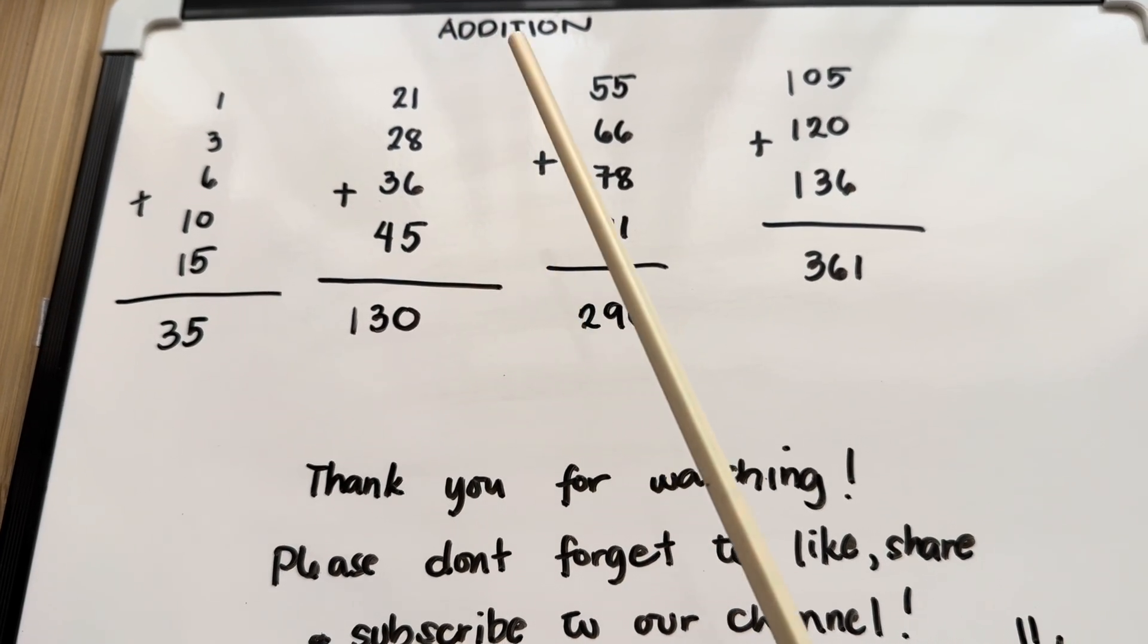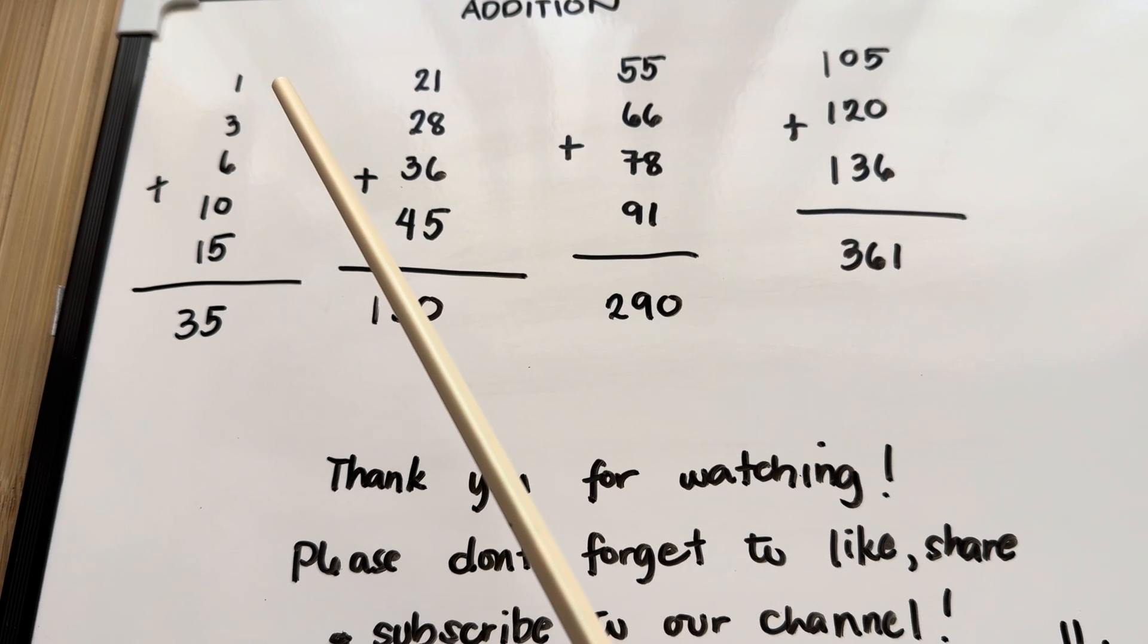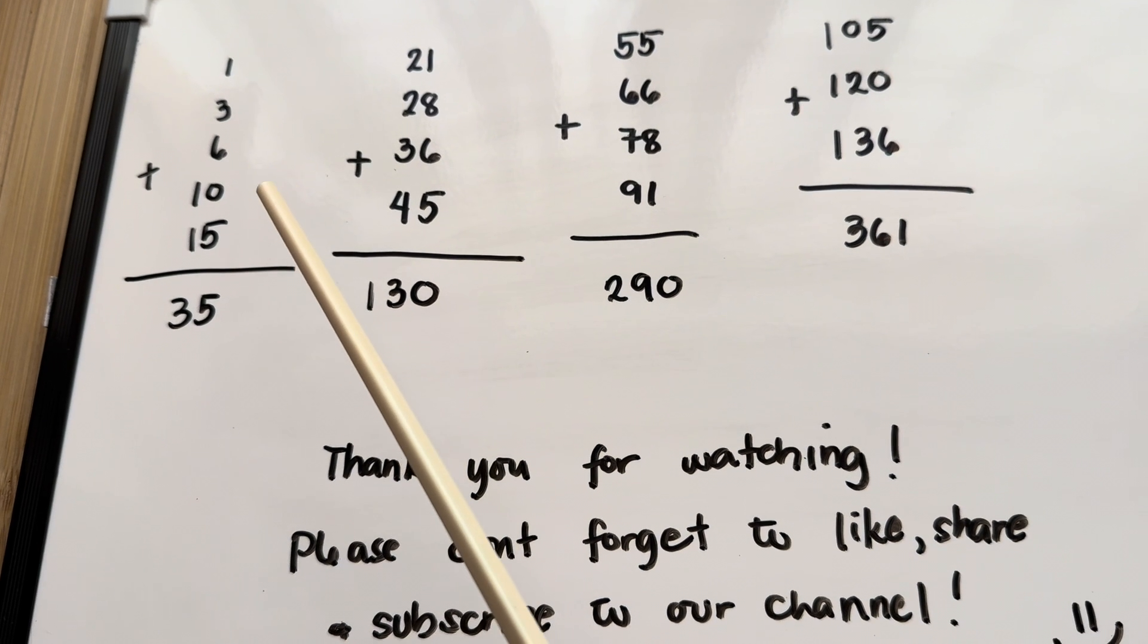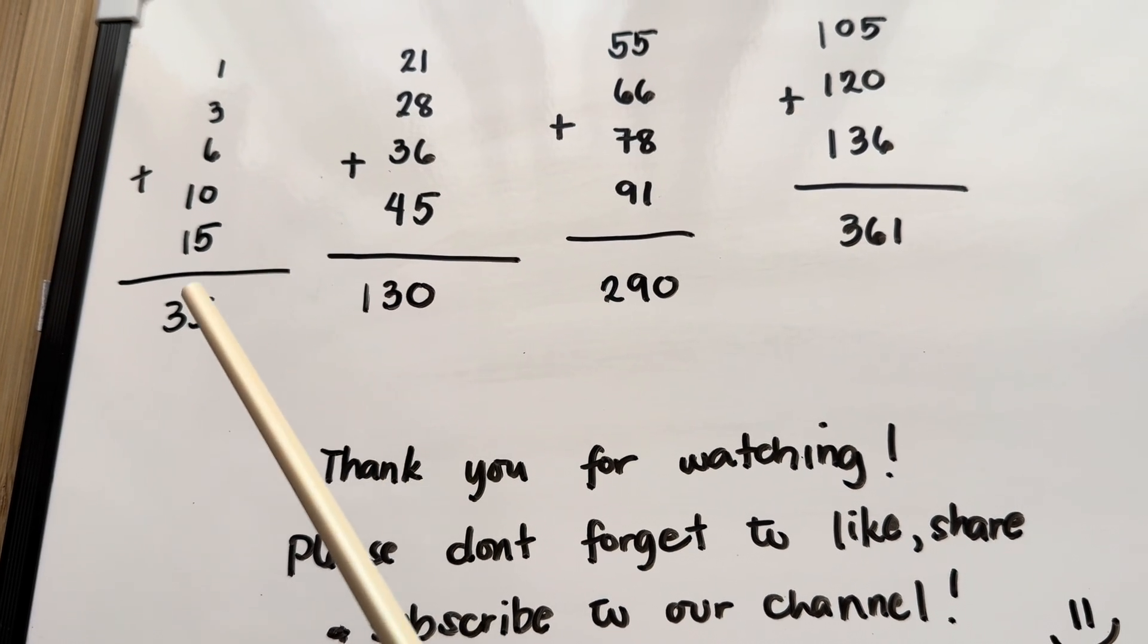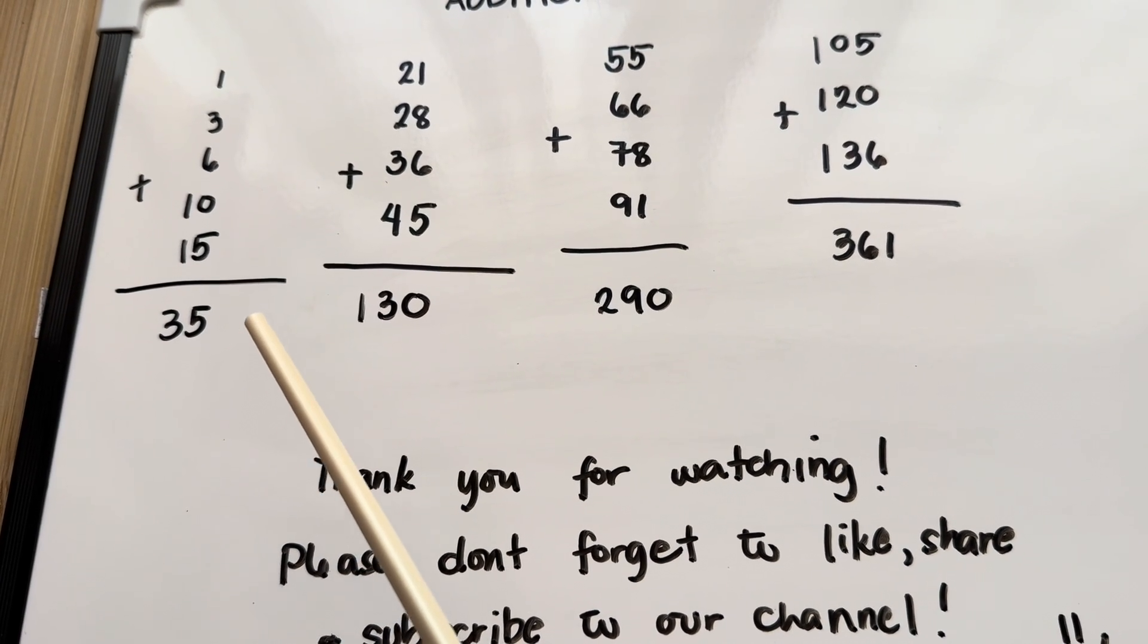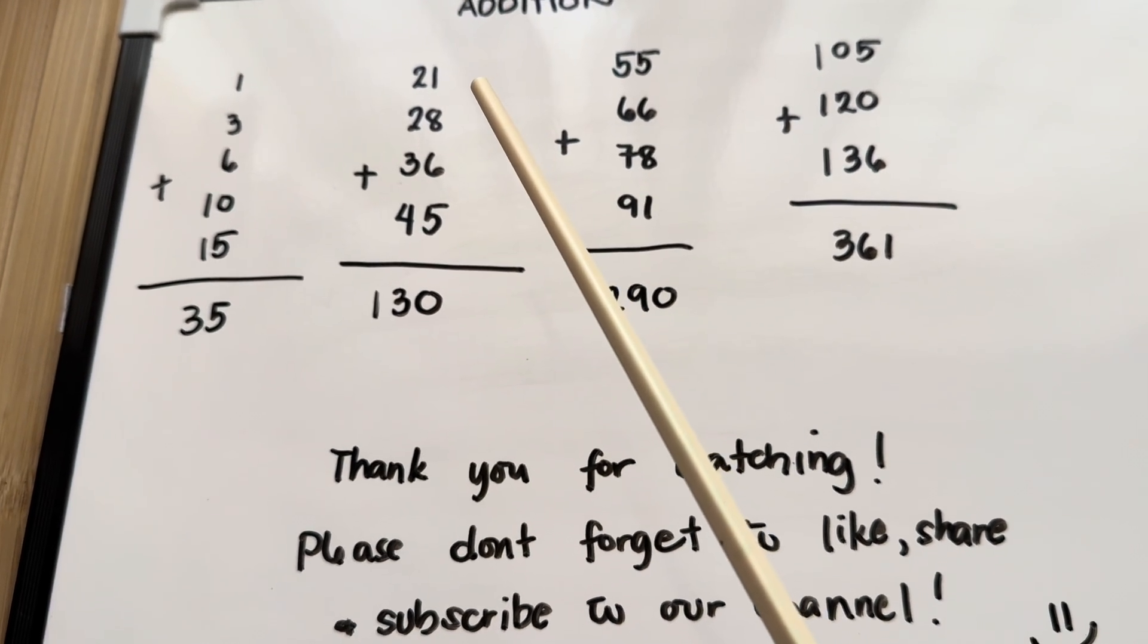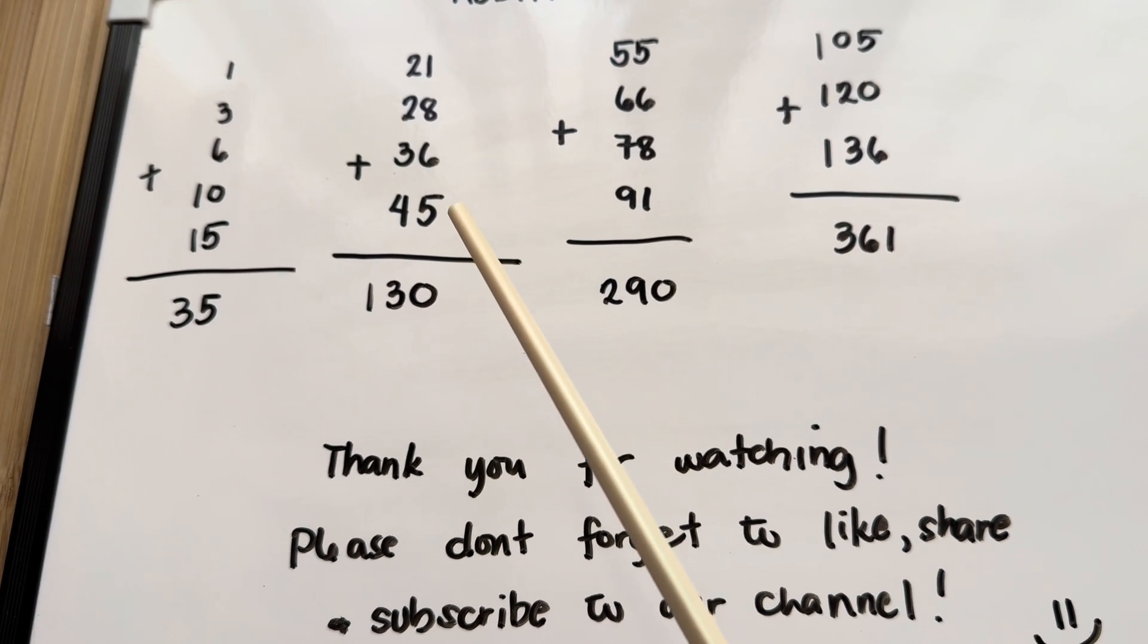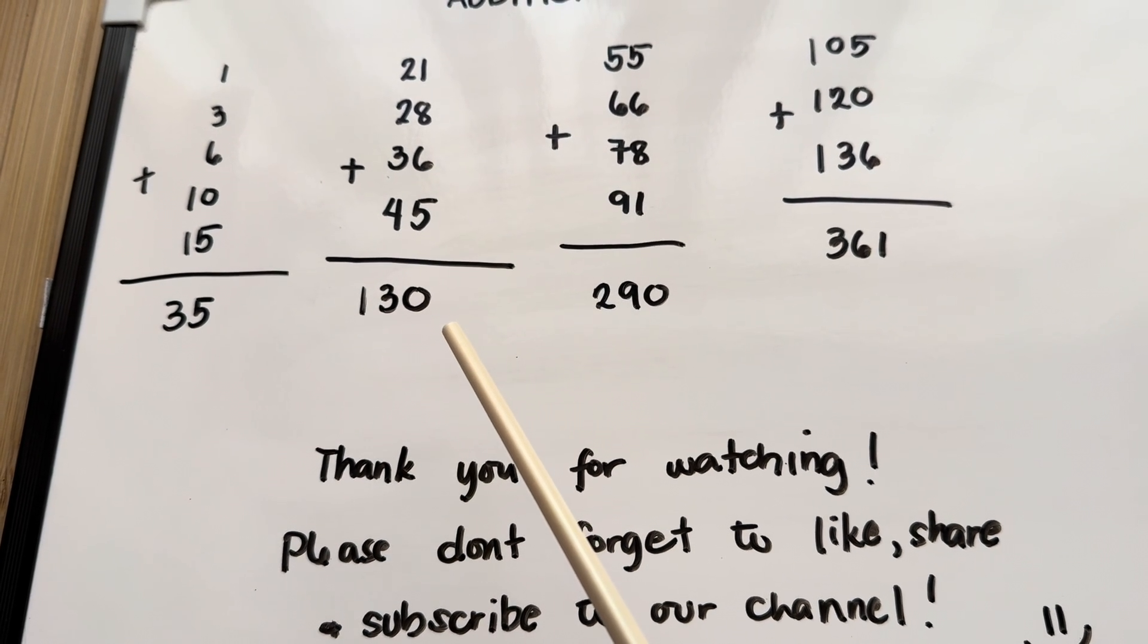Now, let's do addition. 1 plus 3 plus 6 plus 10 plus 15 is equals to 35. 21 plus 28 plus 36 plus 45 is equals to 130.